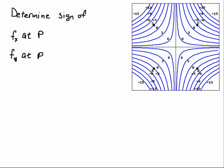One approach you can take is to consider the planes of constant Y — those are the planes going in the horizontal direction. I'm going to draw a little arrow at P in the positive X direction, and then take a look at what's happening to the contour. So if I were located at P and going in the positive X direction along a plane of constant Y — parallel to the X axis — I would be going downhill, because these numbers are going from bigger to smaller.